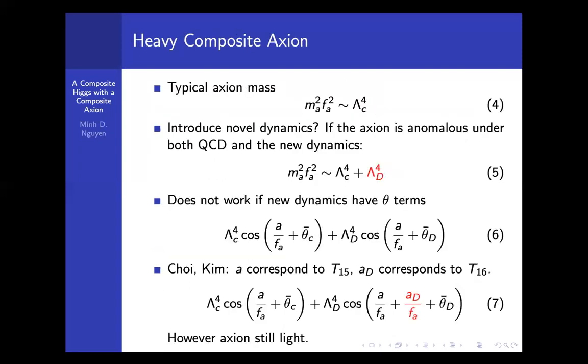So how do you make an axion heavy? Typically the mass of the axion follows the standard formula: ma·Fa squared is determined by the QCD instantons, so it's proportional to Λc.